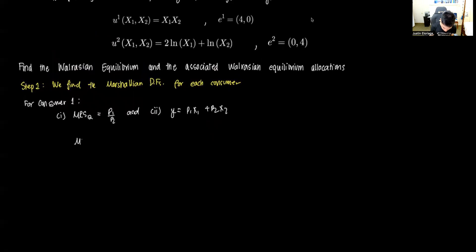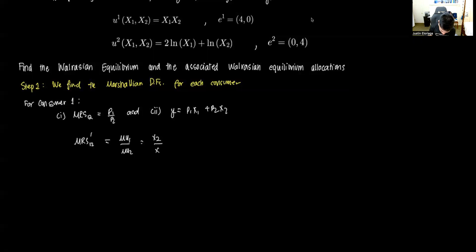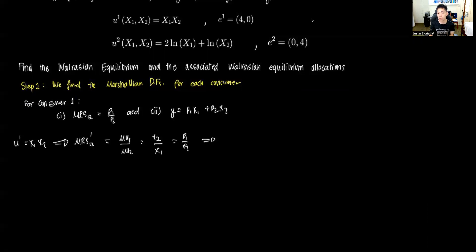The MRS for consumer one is computed as MU1 over MU2. Deriving the utility function U1 = x1·x2 with respect to x1 gives x2, and with respect to x2 gives x1. Therefore MRS equals x2 over x1. We equate this to P1 over P2, which allows us to get an intermediate value for x2: x2 equals P1·x1 divided by P2.